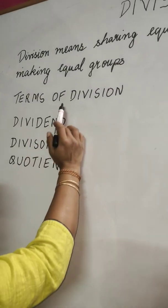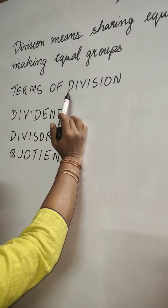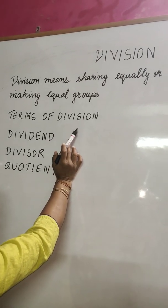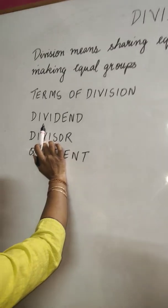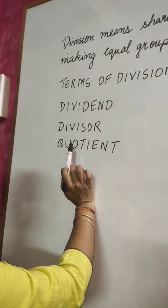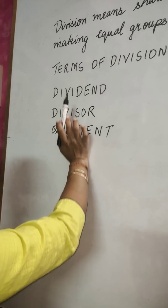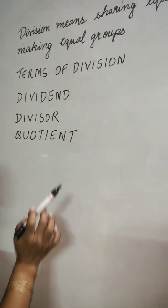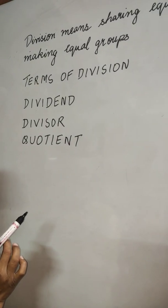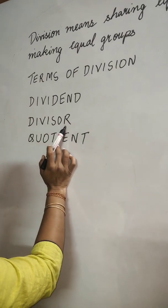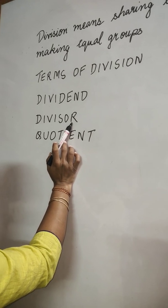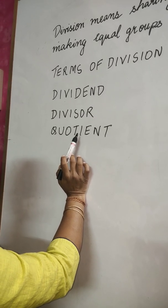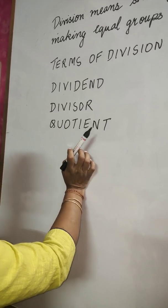Next, we are going to learn about the terms of division. Let us get familiar with the terms of division: dividend, divisor, and quotient. The number to be divided is called the dividend. The number by which we divide is called the divisor. The result, or the answer we get, is called the quotient.